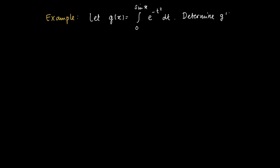And we want to find the derivative of g. Well, as a first method we discussed the possibility of taking a primitive of e to the power of the integrand directly.